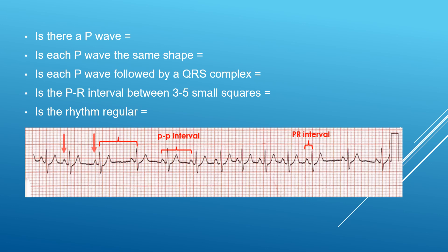Now let's assess the P waves. As I highlight them, you can see the P waves have a very regular morphology — they are not changing. They appear to be coming from the sinus area, so these are sinus P waves.